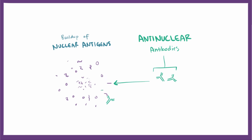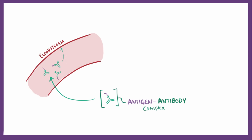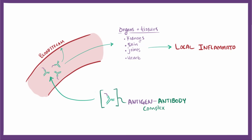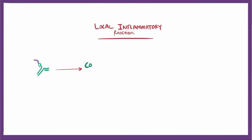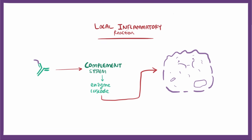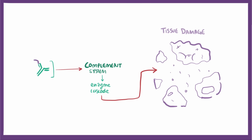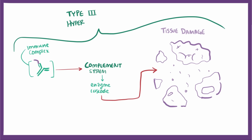Anti-nuclear antibodies bind to nuclear antigens, forming antigen-antibody complexes. These complexes enter the blood and deposit on vessel walls in organs like the kidneys, skin, joints, and heart. Deposited complexes initiate a local inflammatory reaction through activation of the complement system, which after a cascade of enzyme activation leaves cell membranes with channels that cause cells to burst and die. When tissues are damaged by immune complexes, this is known as a type 3 hypersensitivity reaction.